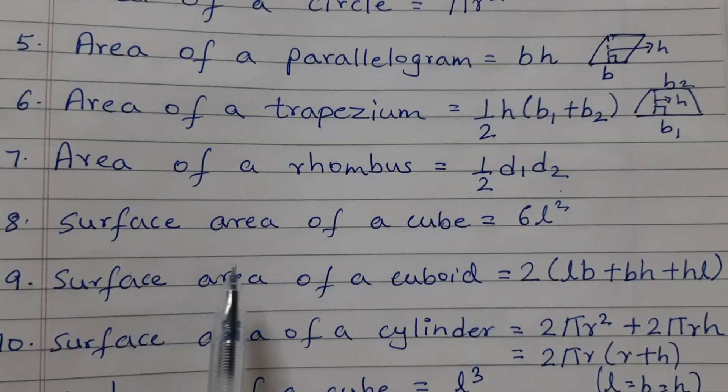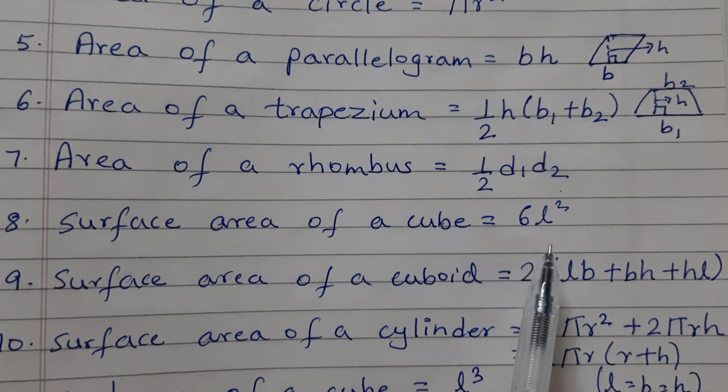Surface area of a cube is equal to 6 into L squared. A cube has 6 faces which are squares. Area of each face is L squared and 6 faces, so 6 L squared.